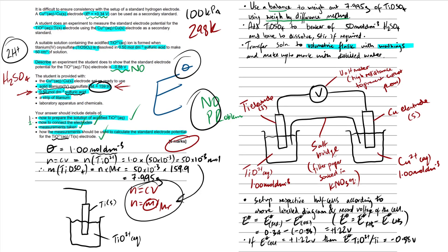Draw a detailed labelled diagram with solids, aqueous solutions at standard conditions, salt bridge (filter paper soaked in potassium nitrate). Remember the electrode potential equation, record the voltage of the cell, and write a closing statement. These six-mark level of response questions are hard to mark - include all the information you can. That's the best you can do.